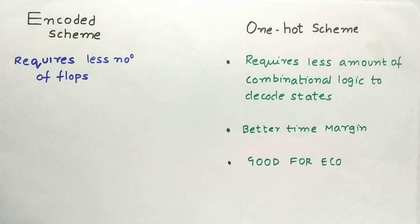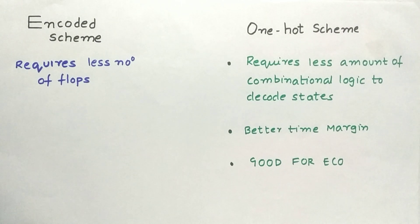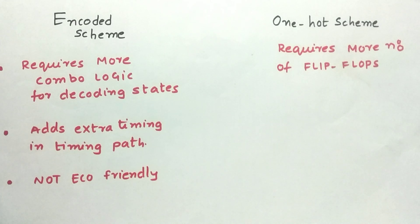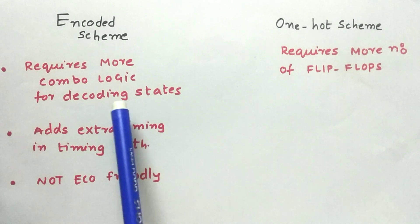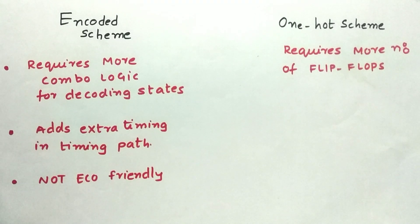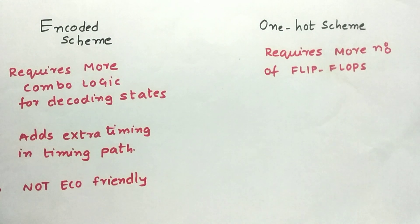Because of less combinational logic, one-hot encoding has a better time margin and is good for ECO, since the state information is already preserved in the flops during synthesis. The disadvantage of binary encoded scheme is more combinational logic for decoding, which adds propagation delay to the timing path, and binary encoded scheme is not ECO friendly. The disadvantage of one-hot encoding is that it requires more flops — as the number of states increases, we need more flops.